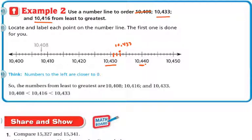The next number I'm looking for is 10,416. So 10,410. So 11, 12, 13, 14, 15, 16. So my dot is going to go right there. 10,416.